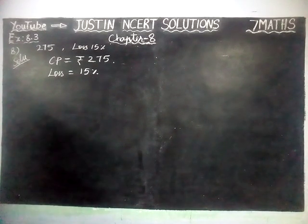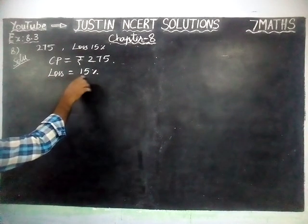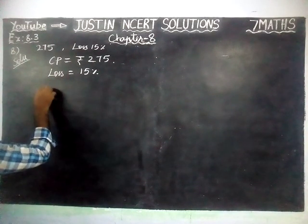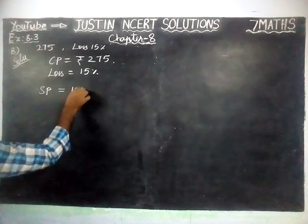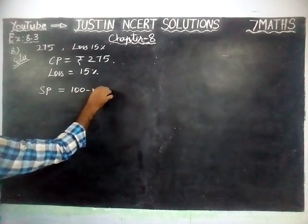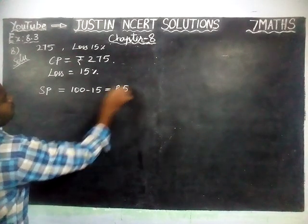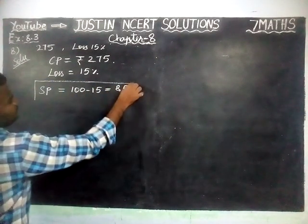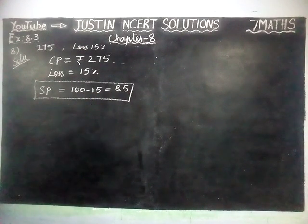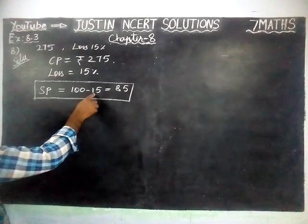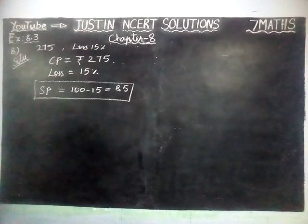Now, for Rs. 100, 15 rupees is lost. So SP is equal to 100 minus 15, which is equal to 85. This is for Rs. 100 — when 15% is lost, we get SP = 85. Now we are going to convert it for Rs. 275.